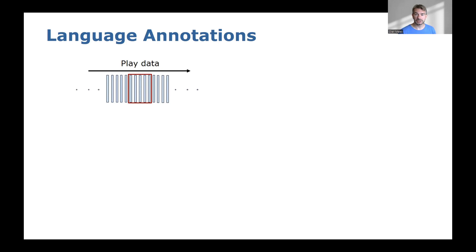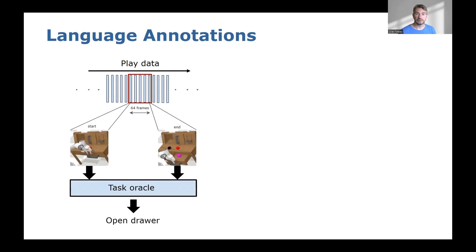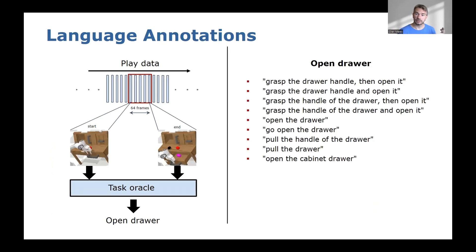For the language annotations, how this is implemented in CALVIN is that we sample random windows of around 64 frames from the recorded dataset and evaluate if between the first and the last frame of the sequence any task has been solved. If the task oracle informs us that, for example, the task 'open the drawer' was performed, we then sample from a predefined set of language instructions corresponding to that task.